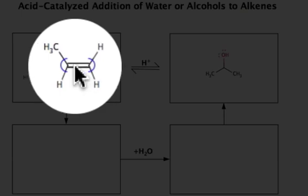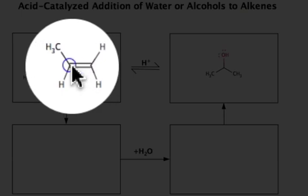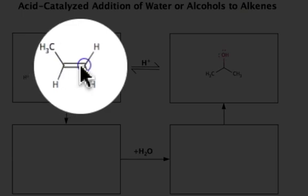What I could see is that if I add the proton to this carbon atom, I will generate a highly unstable primary carbocation, whereas if I add the proton to this carbon atom, I'll generate a more acceptable secondary carbocation.